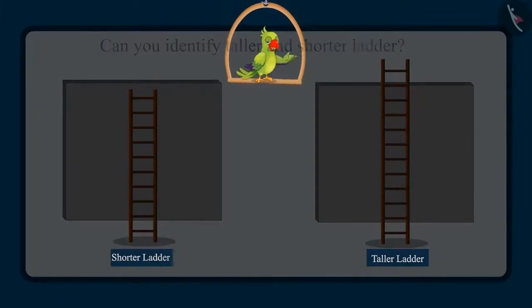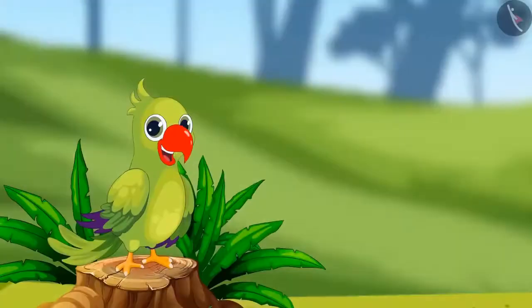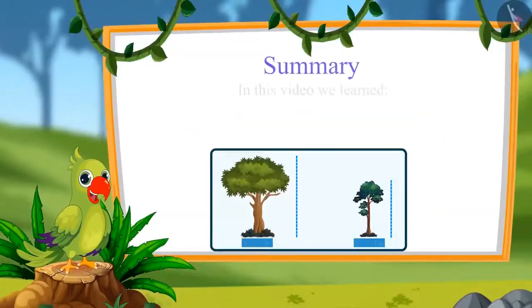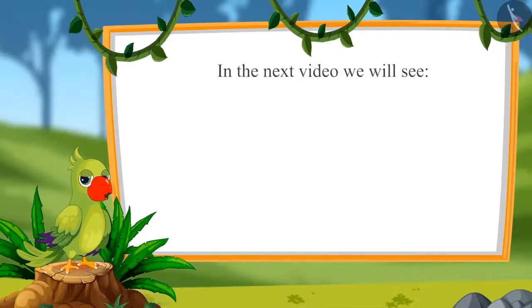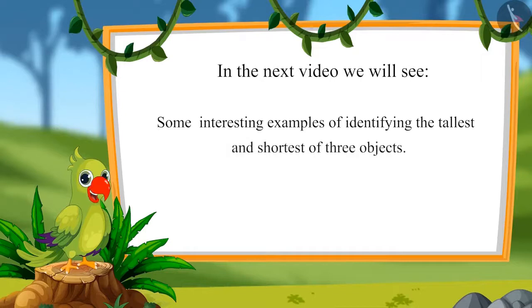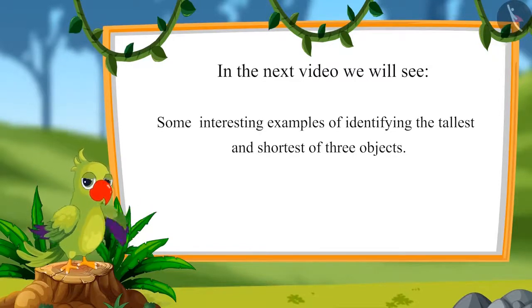So children, I hope that you enjoyed identifying and comparing taller and shorter objects. Now you can identify the tall and short objects around you and compare them to tell which is taller and which is shorter. That's all for today. In this video, we learnt to identify taller and shorter objects between two objects. In the next video, we will see examples of identifying the tallest and shortest of three objects.